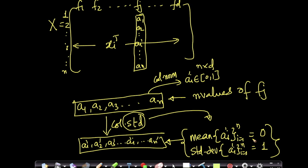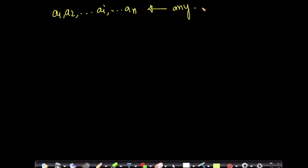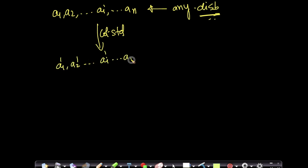This is one form of standardization — one form of transforming or getting rid of scale. Here I'm not assuming anything about the distribution of a1, a2, ..., aN. This can come from any distribution, not necessarily Gaussian. Through column standardization, I'm converting them into a1', a2', ..., aN' such that their mean is 0 and standard deviation equals 1.